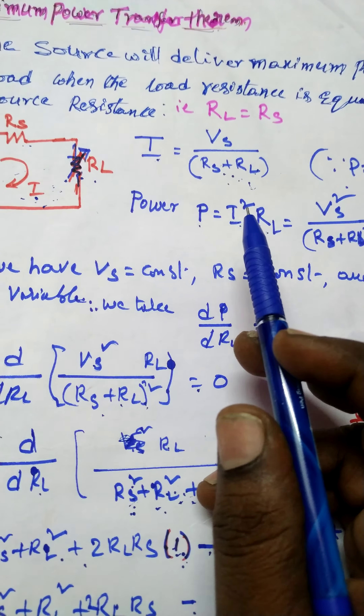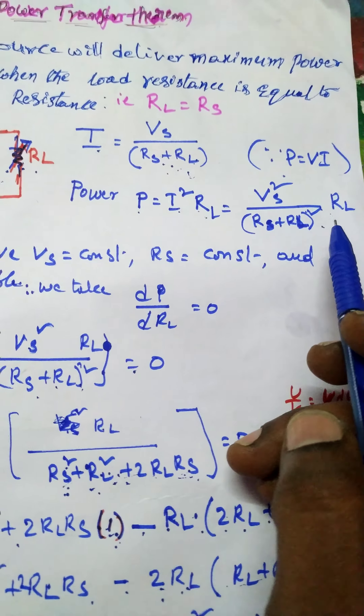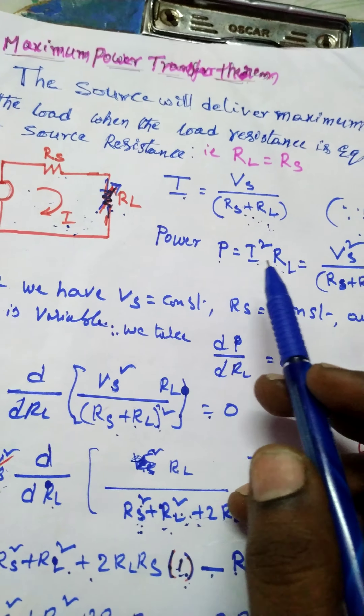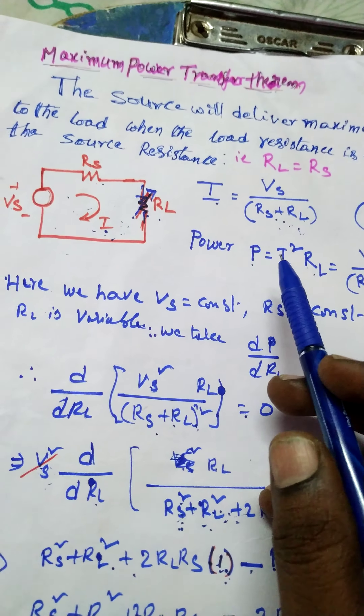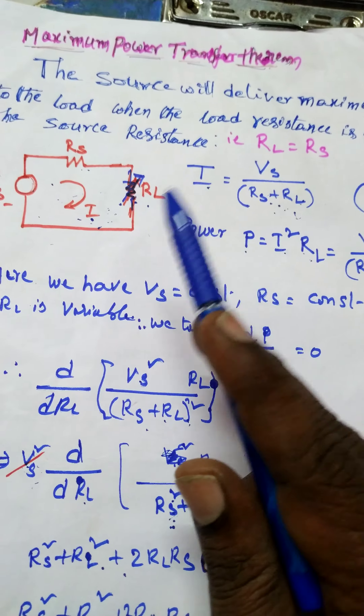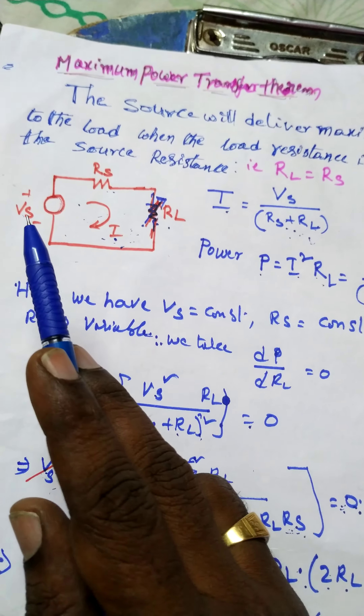Now to calculate the power: P is equal to VI, or simply power P is equal to I squared times RL. Since we already calculated I, substituting gives P equals VS squared divided by (RS plus RL) whole squared, multiplied by RL. This is the power of the given circuit.